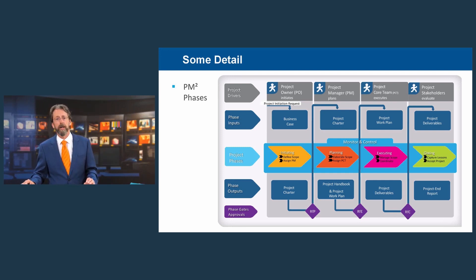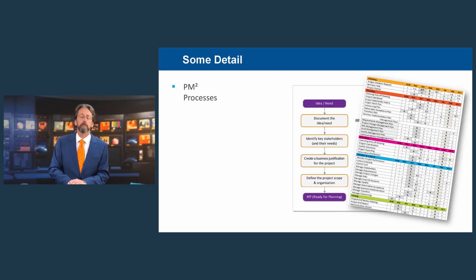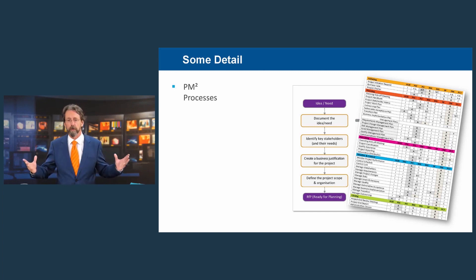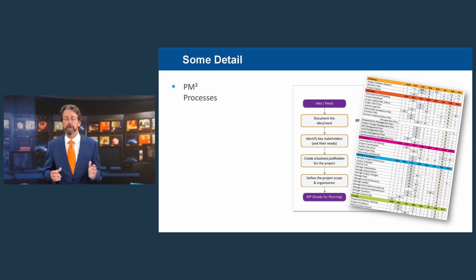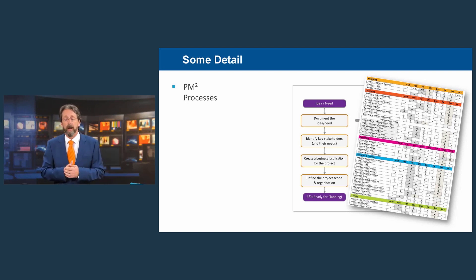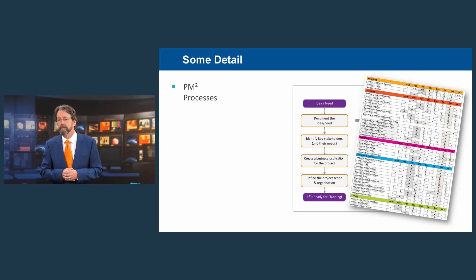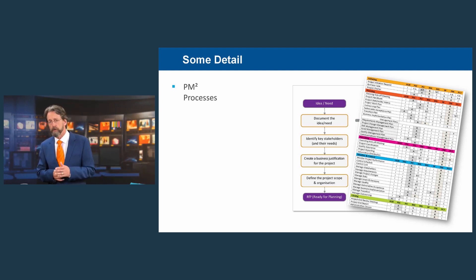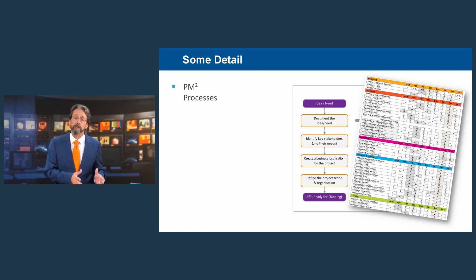The third pillar is processes. PM2 is a process model for running a project — you need processes for managing risk, for delivery acceptance, for managing quality, and for knowing who is responsible for doing what and when. PM2 offers, either in the guide or in the templates for various plans, detailed descriptions of possible activities to include in the management of your project, and connects those activities to roles from the governance model using a RASCI matrix.